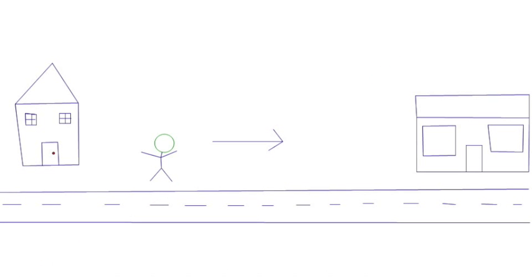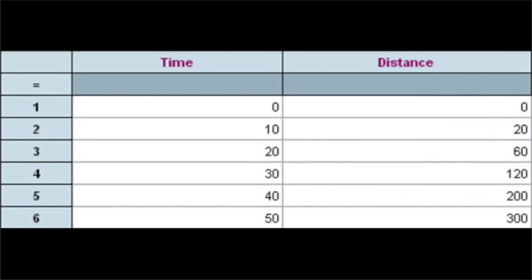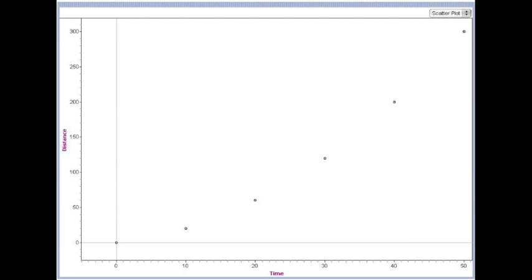Let's look at another example. This time the person walks the same path, but we track them at the following positions: at 10 seconds, 20 meters; at 20 seconds, 60 meters; at 30 seconds, 120 meters; at 40 seconds, 200 meters; at 50 seconds, 300 meters. If we plot their position...